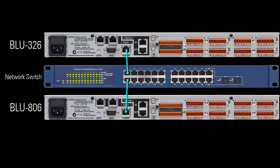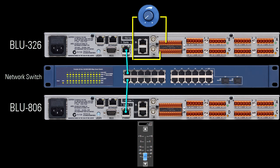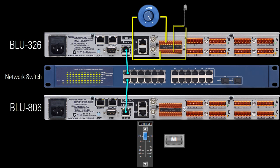For example, an analog potentiometer connected to a GPI on the Blue 326 can control a volume parameter within the block diagram of a Blue 806. And as another example, a mute parameter within the Blue 806 can control an LED on a GPO on the Blue 326.